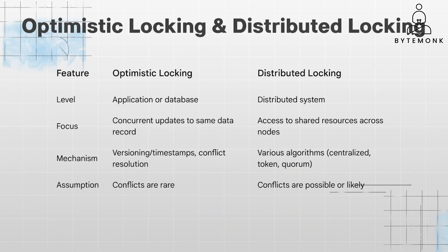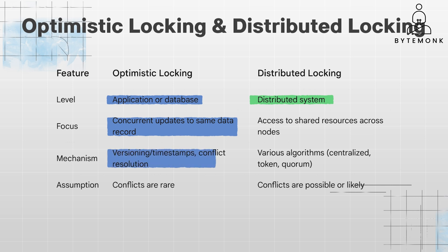Optimistic locking primarily operates at the application or database level, whereas distributed locking operates across multiple nodes or processes in a distributed system. Optimistic locking manages concurrent updates to the same data record or object within a single system or database. It relies on version numbers or timestamps to detect conflicts and resolve them when multiple transactions try to modify the same data concurrently. It also assumes that conflicts are rare and optimizes for performance by allowing concurrent access until a conflict is detected. For example, two users editing the same document in a collaborative editor.